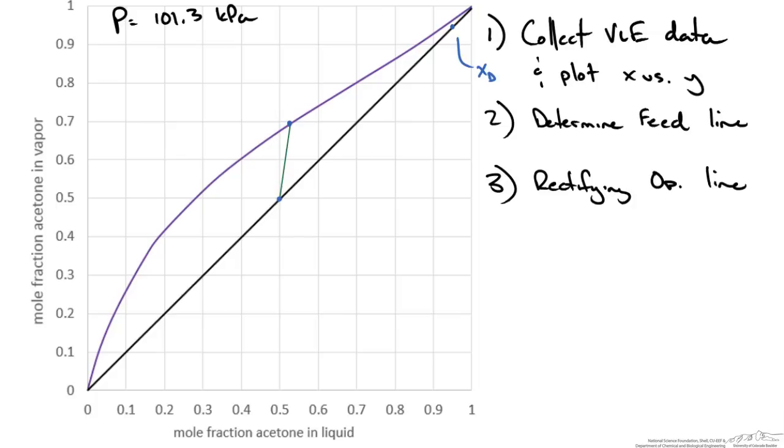We know the intercept is around 0.12, which is about as close as I can draw on this. We're going to make a line that goes through these two points, and that is our rectifying line.